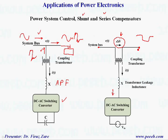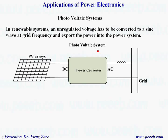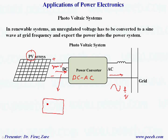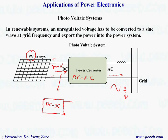In renewable systems, for example when we have a PV system, because of variable voltage and because we get DC voltage, we need to export the power into the power system. That means we need to generate AC voltage with constant frequency and voltage, so we need a DC-AC converter. In some applications, if the DC voltage is not high enough, we may have another converter cascaded with this one — using a DC-DC converter first to boost and regulate the voltage, and then connect it to the DC-AC converter to export power into the grid.